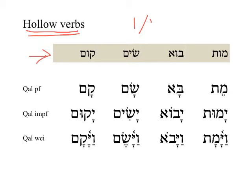Here are some examples. From קום (kum), meaning 'to arise,' we have קָם (kam), 'he arose.' We can see that the middle root letter has dropped out because it's hollow, leaving just the pe and the lamed, or the first and the third root letters. In the imperfect, the vav stays in as a shurek — יָקוּם (yakum), 'he will arise.'